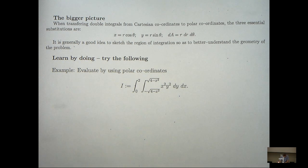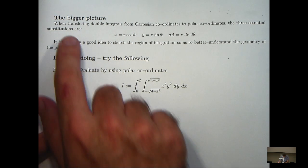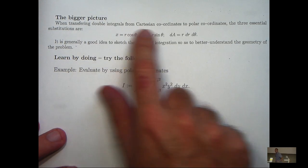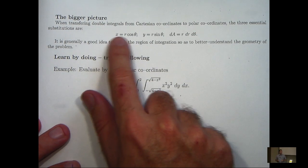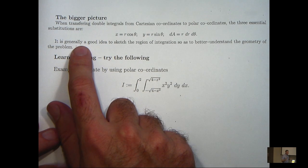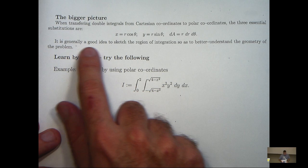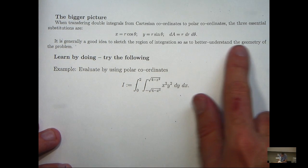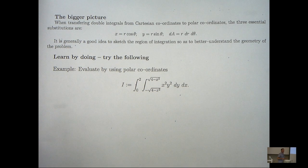So, let's look at the bigger picture. Well, when working with double integrals and moving to polar coordinates, the following three substitutions are useful. And as you saw from the example, it's generally a very good idea to sketch the region of integration so as to better understand the geometry of the problem and have a greater chance of describing it in polar coordinates.